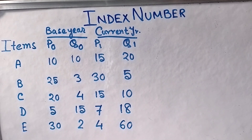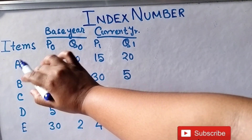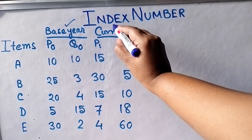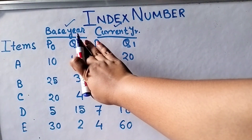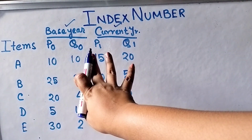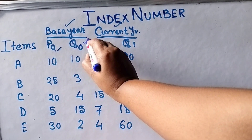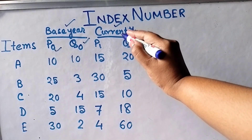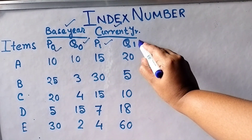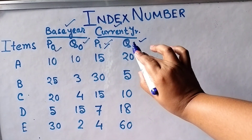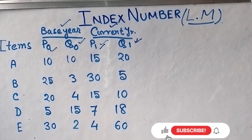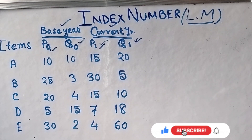Here we can see three basic columns in the table. There are five items: A, B, C, D, E. The second column is the base year and the third column is the current year. The base year has two types: P0, which indicates the price of the base year, and Q0, which indicates the quantity of the base year. In the third column, P1 denotes the price of the current year and Q1 denotes the quantity of the current year. So first we will discuss the Laspeyre's method.